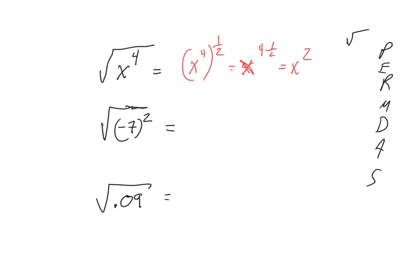And it's an even power, so it would be plus or minus x squared. Because if I have negative x squared times negative x squared, that would be positive x to the 4th. Here, I have negative 7 squared raised to the 1 half power, which is negative 7 to the 2 times a half, which is negative 7 to the 1st, which is just negative 7.